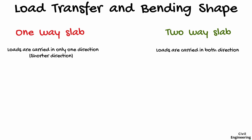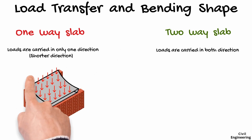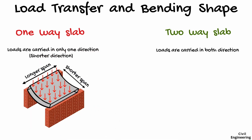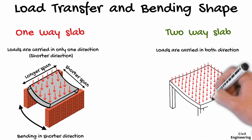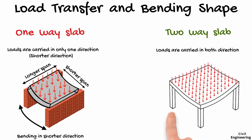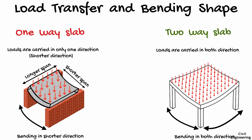This difference in load flow is what changes how each slab behaves and how it needs to be reinforced. Considering the longer and shorter span of a one-way slab, it bends only in the shorter direction. Whereas in a two-way slab, the slab bends in both directions. This is what makes the key difference between one-way slab and two-way slab.